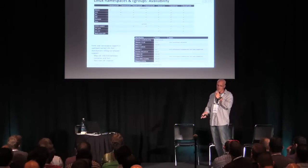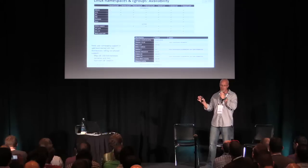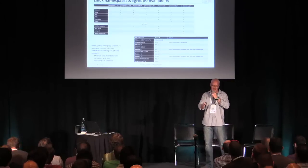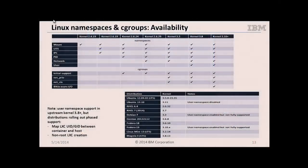This chart is a high-level mapping of namespaces and cgroup functionality into the approximate kernel version they went in. The main takeaway is that some of this stuff is still pretty new — the user namespace is still under development. Bottom line: the newer the kernel, typically the better if it's stable. On the bottom right there's a mapping into some standard Linux distributions, and I need to add Ubuntu 14.04 in there.